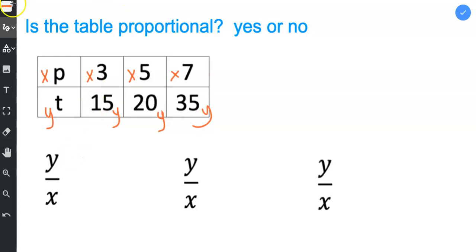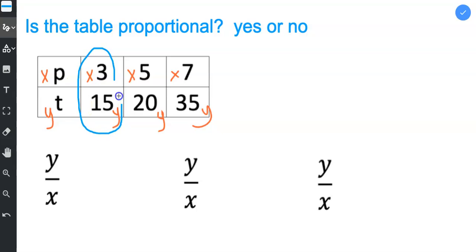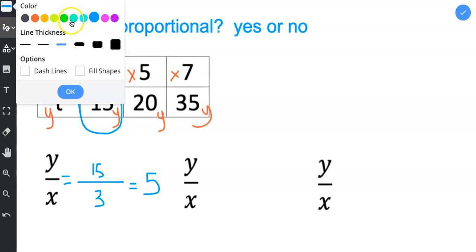Next I'm going to choose a different color and I'm going to fill in x and y in my first unit rate formula. So the y is 15 and the x is 3. 15 divided by 3 is 5, and then I'll pick a new color.